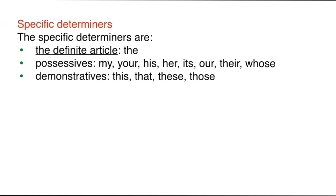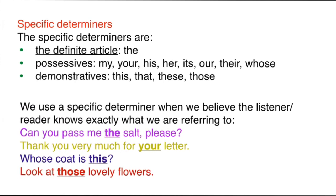There are two types of determiners. The first is specific determiners: the definite article 'the', possessive determiners like 'my', 'your', 'his', 'her', 'its', 'our', 'their', and demonstrative determiners like 'this', 'that', 'these', 'those'. We use specific determiners when we believe the listener or reader knows exactly what we are referring to — for example, 'Can you pass me the salt?' or 'Thank you for your letter' where 'your' specifies a particular letter.